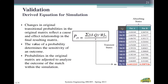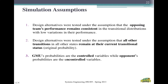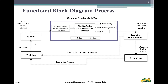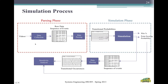This is the resulting 2-by-10 matrix showing transient states eventually going to absorbing states. Our formula sums these values to get the point scoring probability, which was used to validate our simulation. For simulation assumptions: the opposing team's performance remained consistent, design alternatives were changed while all other transitions remained the same, and only George Mason's probabilities were controlled — not the opponents'. Our simulation starts with videos and a post-game analysis tool, where raw data is collected, then parsed using a Python script. Transitional probabilities are inputted into the simulation, and outputs include winning percentage, point scoring probability, and the sequence of events within matches.